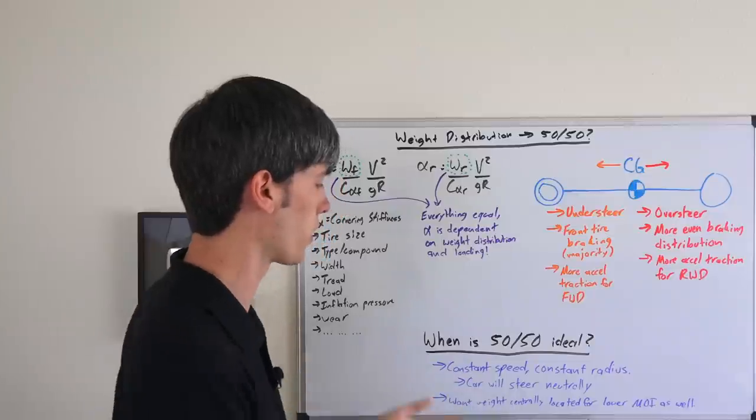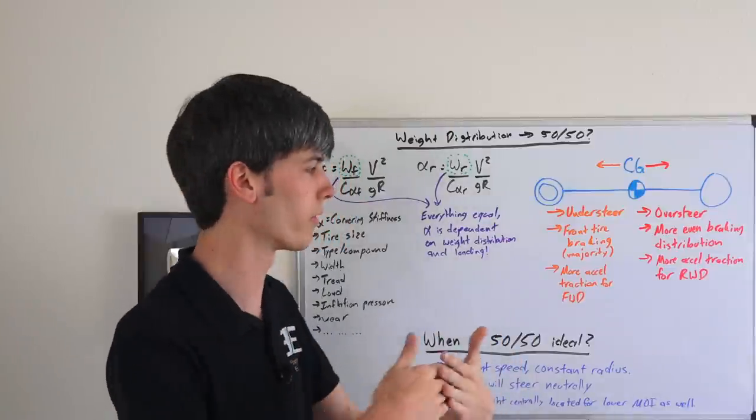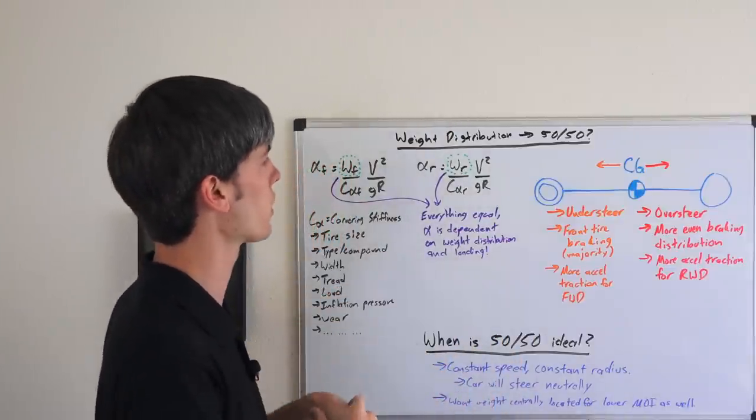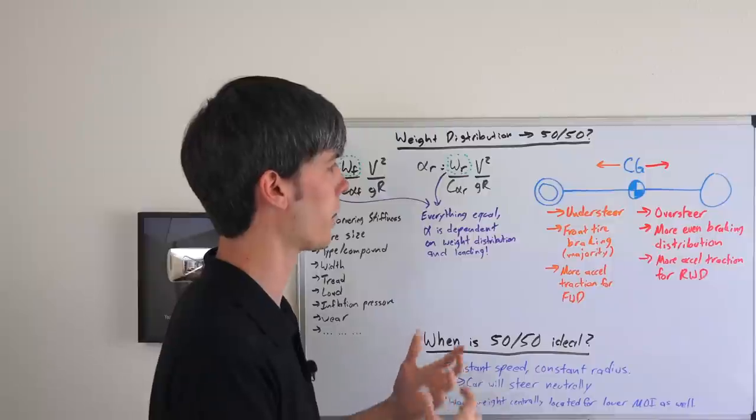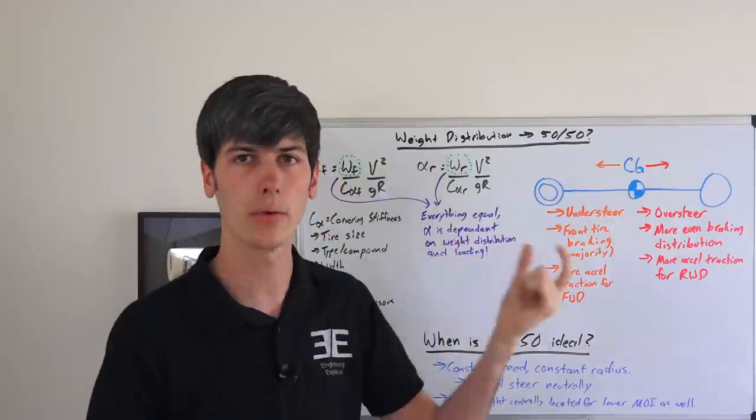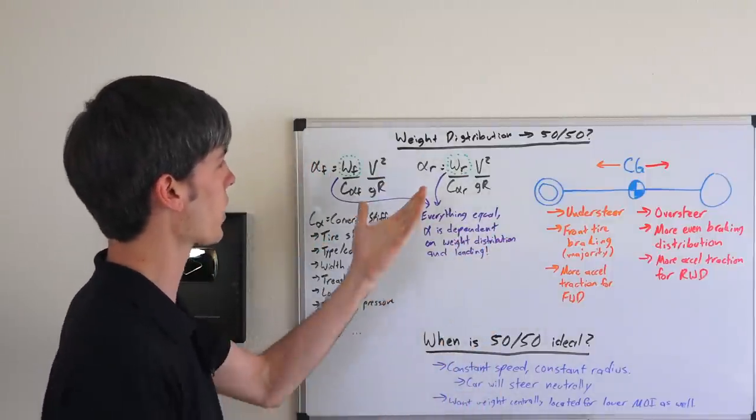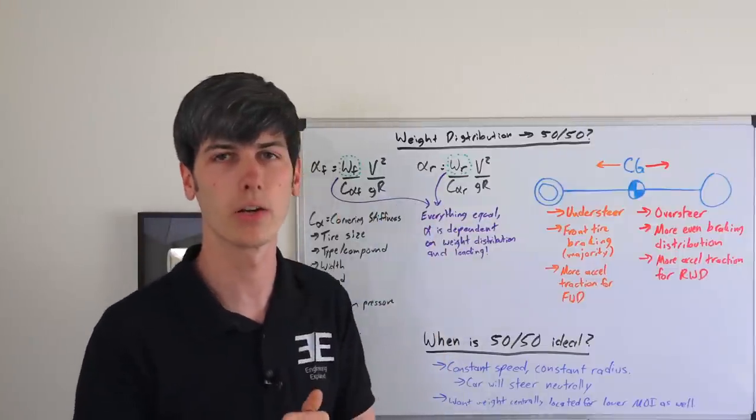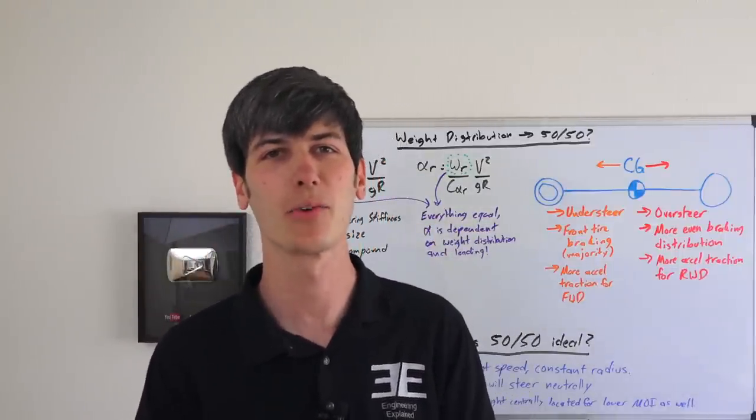This is leaving out the other thing where you want weight centrally located so your car has a lower moment of inertia, but we're just purely talking about understeer and oversteer in this case. You can mitigate that with how you place your center of gravity. It all comes down to these equations which I have derived in another video, also included in the video description. If you have any questions or comments, feel free to leave them below. Thanks for watching.